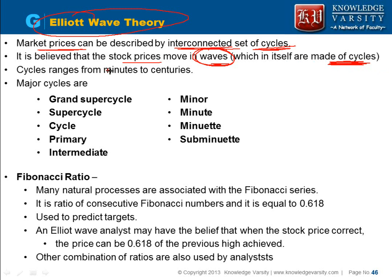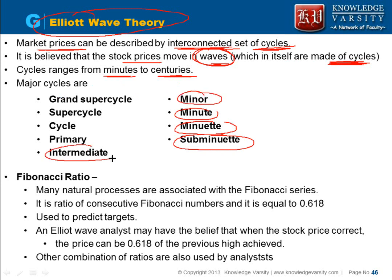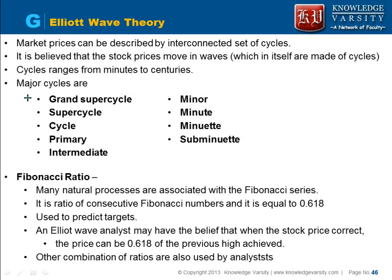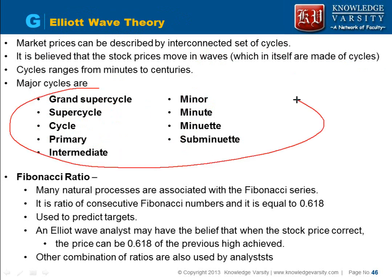Cycles range from minutes to centuries. The cycle levels are: sub-minute, minute, sub-minute, minor, intermediate, primary, cycle, super cycle, and grand super cycle. Stock prices are divided into a grand super cycle — the biggest — which is further divided into super cycle, cycle, primary, intermediate, and so on.